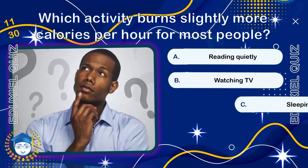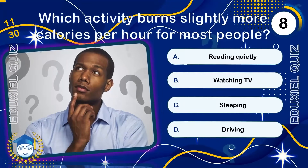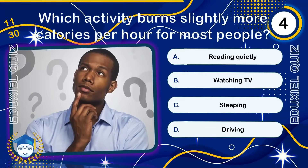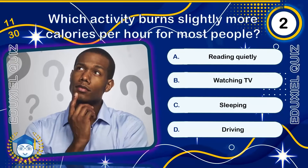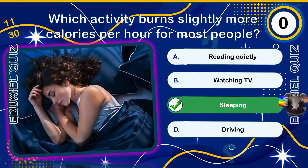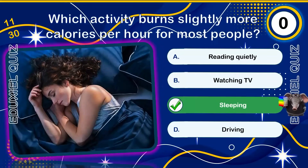Which activity burns slightly more calories per hour for most people? An average person spends about one-third of their life sleeping. Adequate sleep is essential for memory, immunity, and mental health, while chronic sleep deprivation increases the risk of heart disease and diabetes. Sleep cycles last around 90 minutes each.